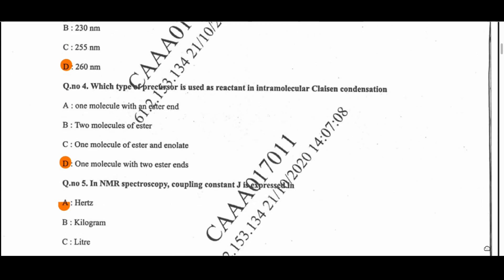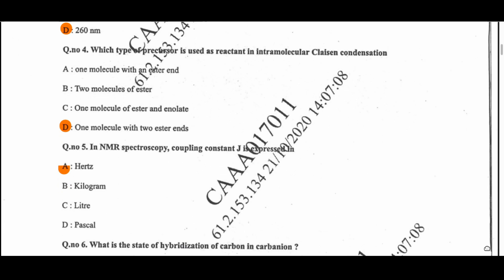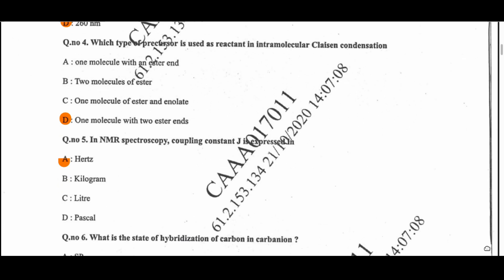Question 4: Which type of precursor is used as a reactant in the intramolecular Claisen condensation reaction? One molecule with two ester ends — that is the precursor for the intramolecular Claisen condensation reaction.